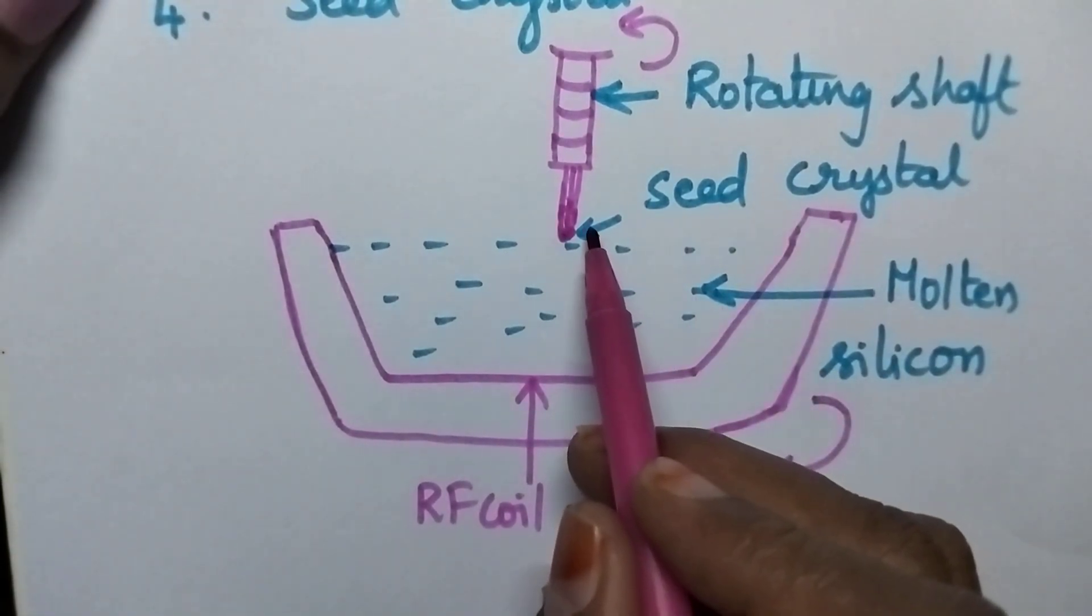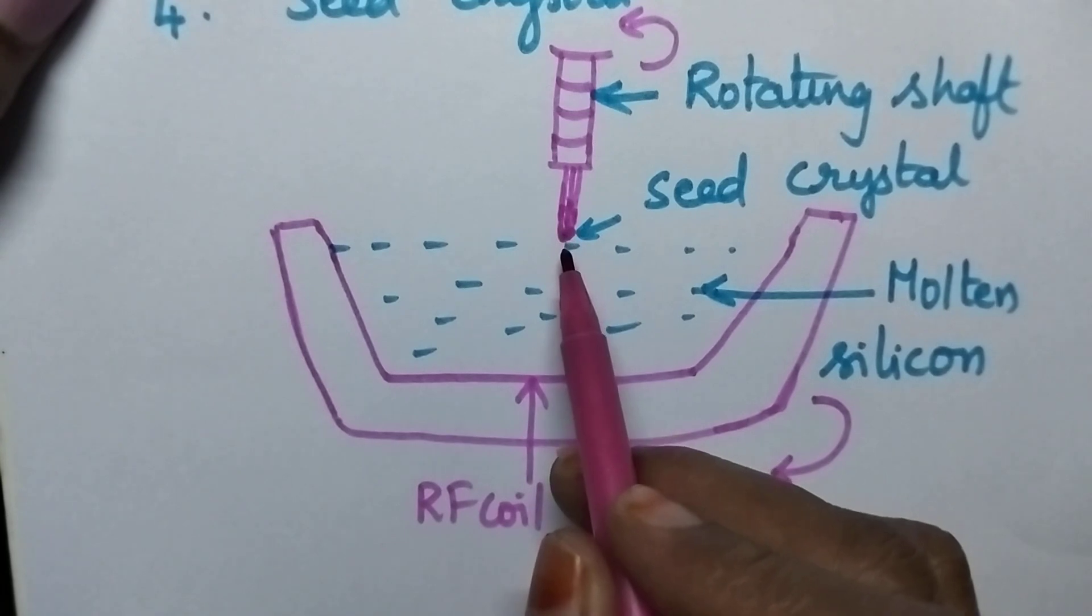Whenever the seed crystal just touches the molten silicon, each and every atom will take the dimensions of the seed crystal.